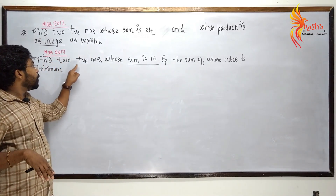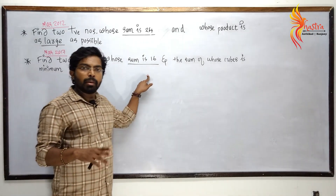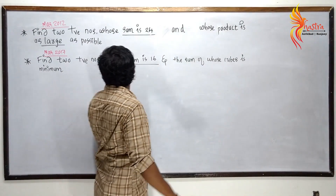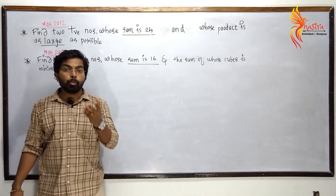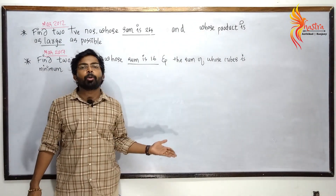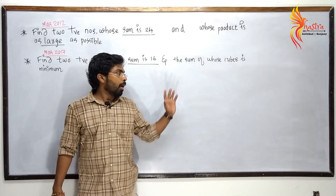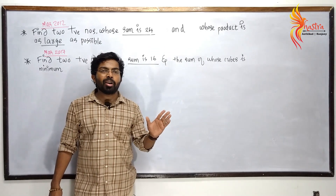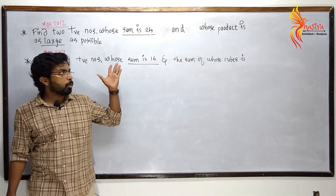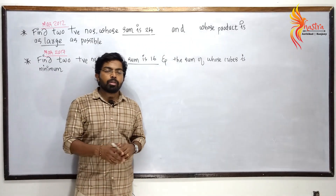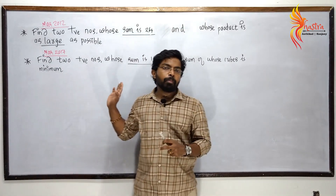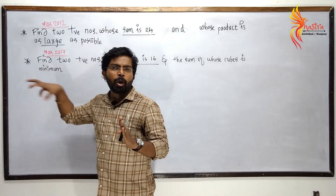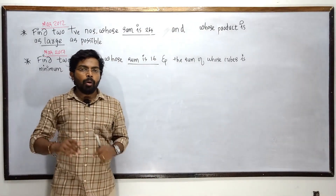Find two positive numbers whose sum is 16 and the sum of whose cubes is minimum. S equals x cubed plus y cubed. Don't forget to subscribe to the video. You will be able to follow the steps. Bye.